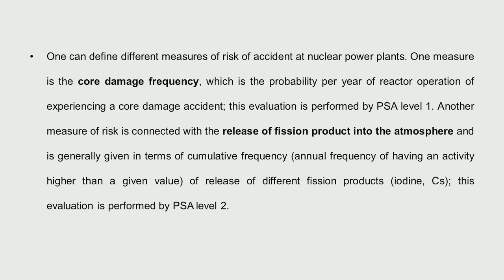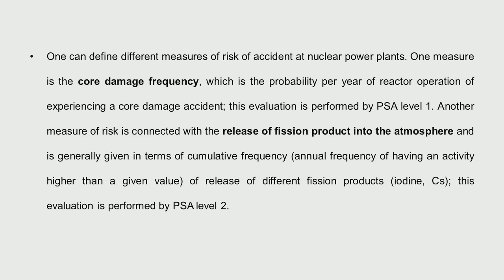Coming to nuclear reactors, which our whole subject of talks in these lectures is about — what is the risk of damaging the core? If the core is damaged, the fission products from all the fissions which have already occurred will come out. So we measure the core damage frequency: the probability per reactor year of experiencing a core damage accident. In the terminology of probabilistic safety analysis, this is called Level 1, which is the most important — what is the frequency with which core damage can happen?